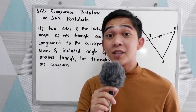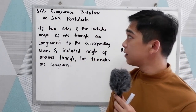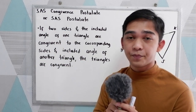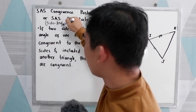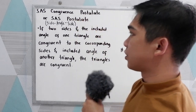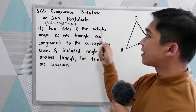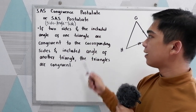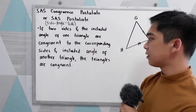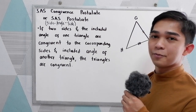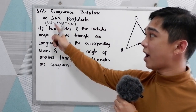Good day everyone. Today I will be discussing the SAS congruence postulate, or simply SAS postulate. That stands for side angle side postulate. The postulate states that if two sides and an included angle of one triangle are congruent to the corresponding sides and included angle of another triangle, the triangles are congruent. So we are dealing with two sides and an included angle — that is why we have side angle side.